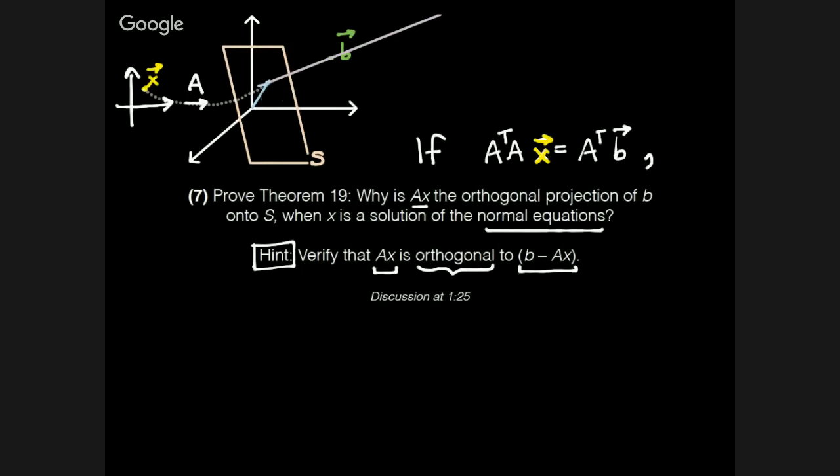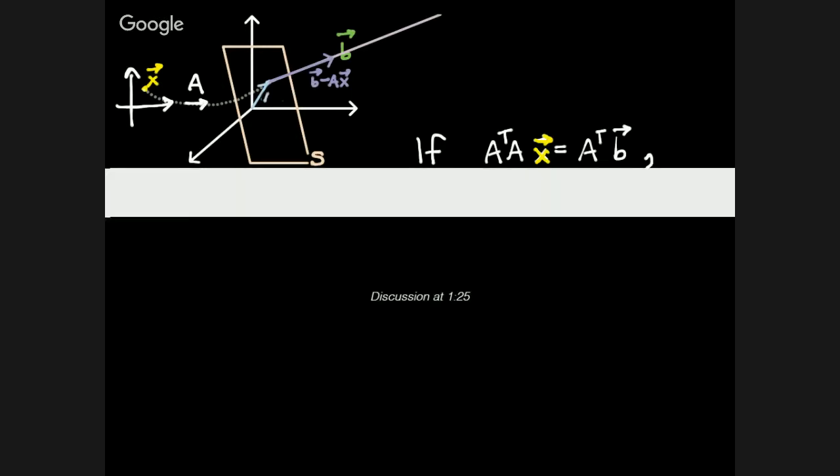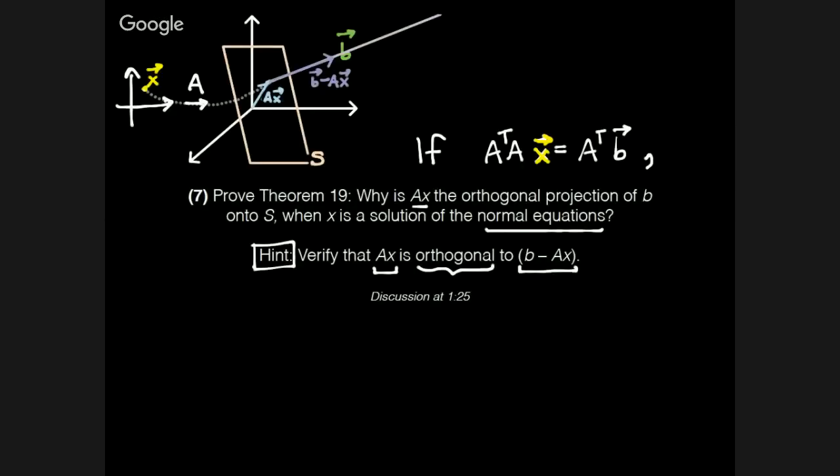The vector pointing from Ax to B, you'll remember from vector calculus, to get a vector pointing from one point to another point, you simply subtract those points, so this vector is B minus Ax, this vector is Ax. And if you can show that those vectors are orthogonal, then you have completed this proof.